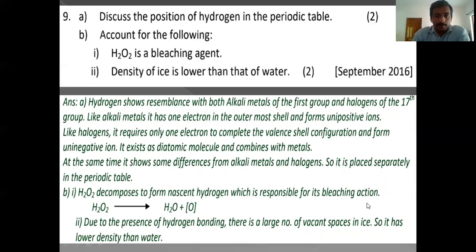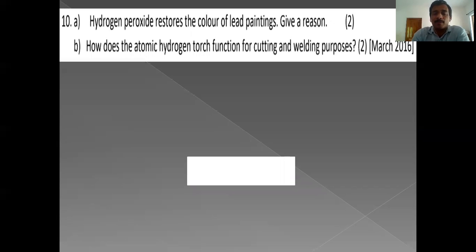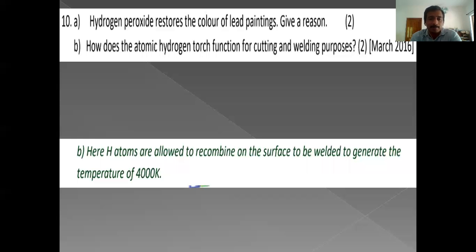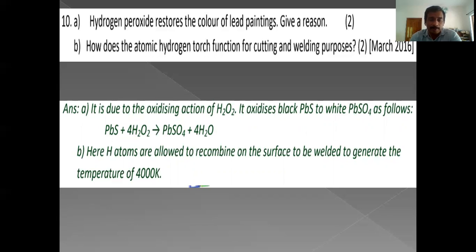Hydrogen peroxide restores the color of lead paintings. Lead paintings turn dark due to formation of lead sulfide (PbS). H2O2 as an oxidizing agent can oxidize lead sulfide to lead sulfate: PbS + 4H2O2 → PbSO4 + 4H2O. By removing the dark lead sulfide, the original color of the painting is restored.